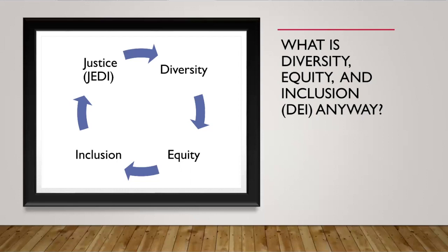Just as I've done with the other terms, Merriam-Webster defines justice as the maintenance or administration of what is just, especially by the impartial adjustment of conflicting claims or the assignment of merited rewards or punishments. DEI trainings, workshops, talks, etc. act as great tools for racial and social justice activism and advocacy, just as DEI education can enhance communication and interpersonal skills.